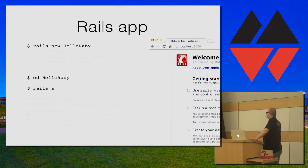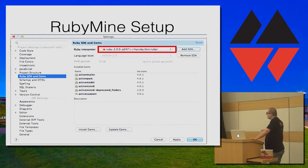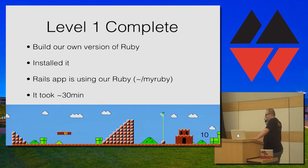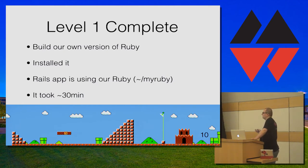You can build an app and actually run it. So at this point we've pretty much built Ruby from scratch, installed Rails, created a new app, and even run that app using our CRuby. If you're using RubyMine, the setup is also easy — you just specify in SDK the location of the binary under my Ruby folder. This completes level one. We built our own version of Ruby, installed and configured it, got Rails to work, and it shouldn't take you longer than 30 minutes. This process not only lets you build your own version of Ruby, but also helps you understand what RVM and other tools are doing.